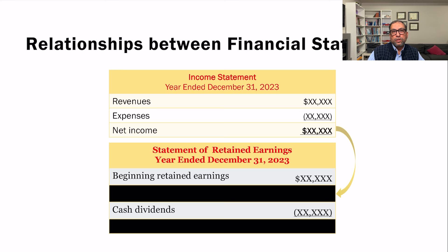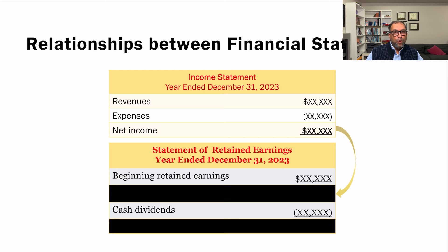To report shareholders' equity in the balance sheet, we need the ending retained earnings balance. We can only get that by preparing the statement of retained earnings first. Therefore, the statement of retained earnings must be prepared before the balance sheet. Also, the ending cash balance in the statement of cash flows must match the cash figure on the balance sheet, so the balance sheet is prepared before the cash flow statement.